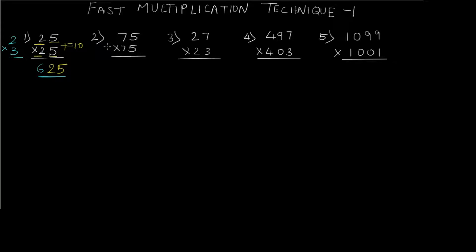Let's try it for question number 2. Again we have 5 and 5 in the units place — 5 plus 5 equals 10, so the first condition is satisfied. For the second condition, we again have the tens digits equal: we have 7 and 7. So both conditions are satisfied.